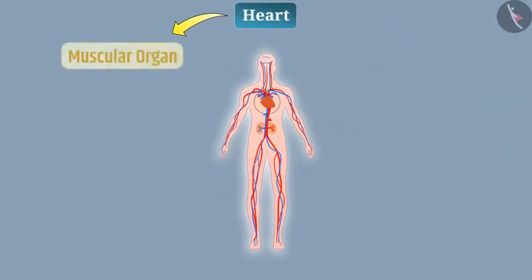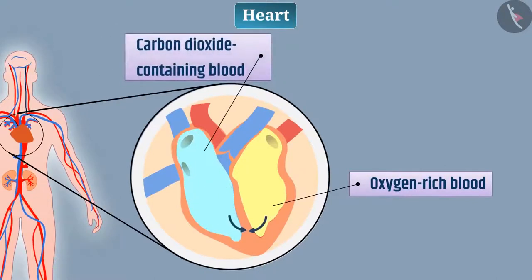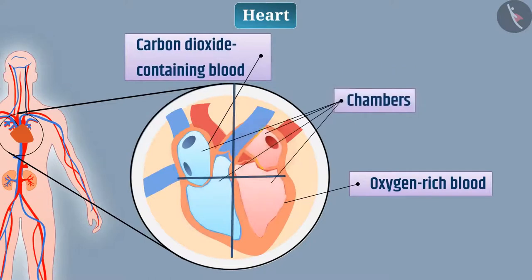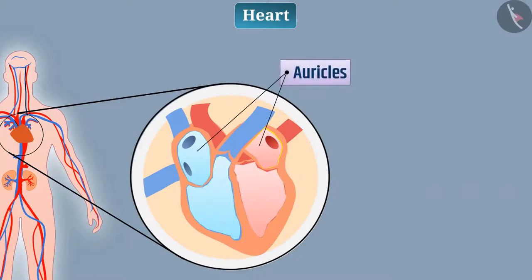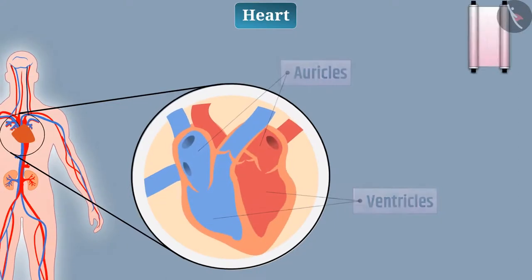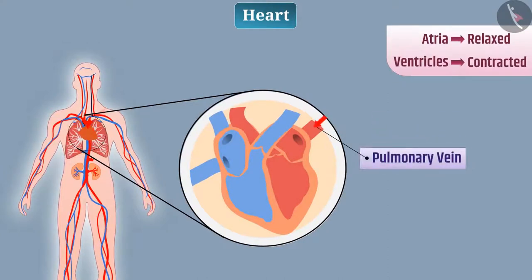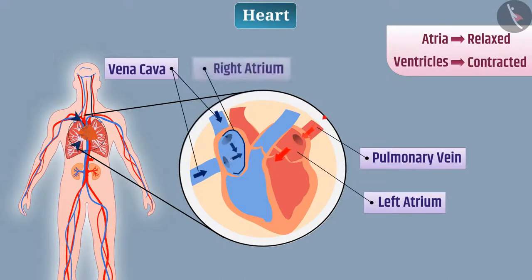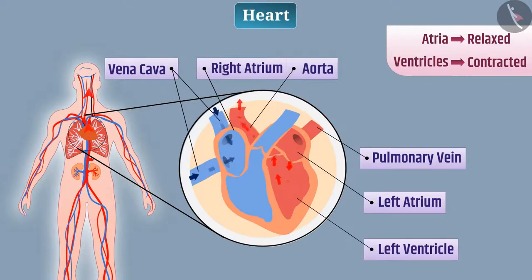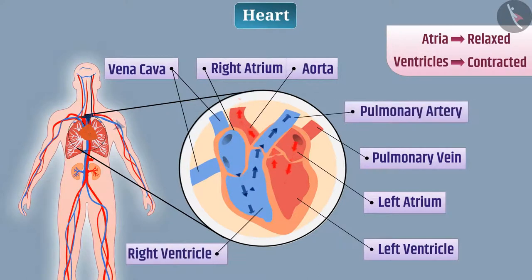The heart is a muscular organ that pumps blood into the vessels. To prevent mixing of oxygen-rich blood and carbon dioxide-containing blood, the human heart is divided into four chambers. The upper two chambers are called auricles and the lower two are called ventricles. When both atria relax and both ventricles contract, the pulmonary vein brings oxygenated blood from the lungs into the left atrium, and the vena cava brings deoxygenated blood from the body into the right atrium. The aorta carries oxygenated blood from the left ventricle to various parts of the body, and the pulmonary artery carries deoxygenated blood from the right ventricle to the lungs for oxygenation.